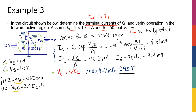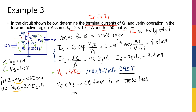Now that we have the collector voltage, we can verify the assumption. VC is smaller than VB, so for the PNP transistor the collector-base junction is reverse biased. Therefore Q1 is confirmed to be in the active region.